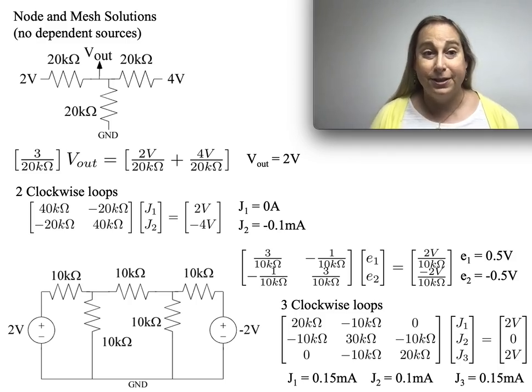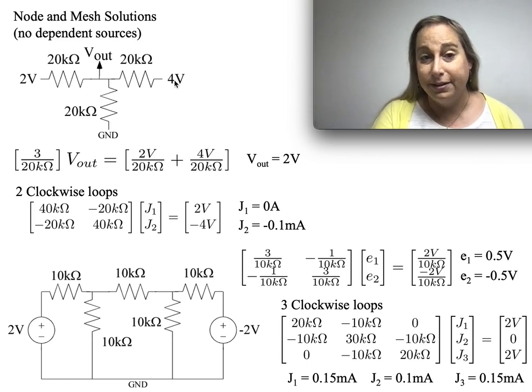We're looking at different circuits, very simple circuits to illustrate some aspects of node and mesh solutions. I want to start with a very simple circuit at the top, which basically looks like I've got three, effectively three voltages: a 2 volt, a 4 volt, and a 0 volt, which is ground.